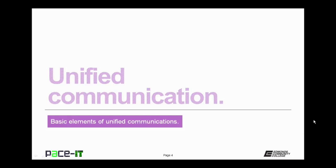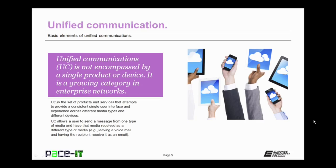Unified communication is not encompassed by a single product or device — it's a growing category in the enterprise network. UC is the set of products and services that attempts to provide a consistent single user interface and experience across different media types and different devices. UC allows a user to send a message from one type of media, such as an email, and have it received as a different type of media — that email could become a text message or a voicemail.